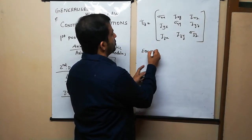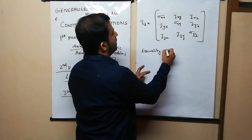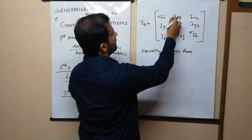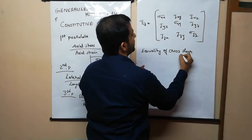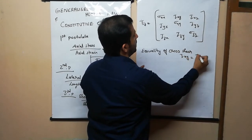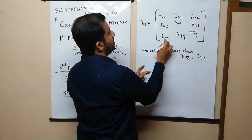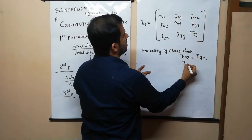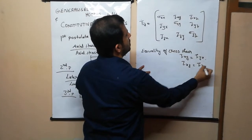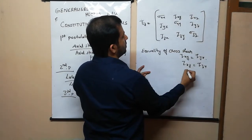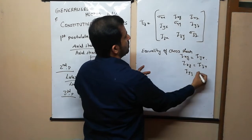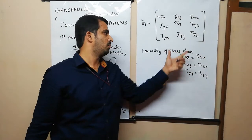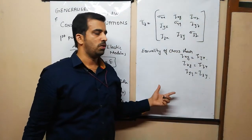The equality of cross shear states that tau_xy equals tau_yx, tau_zx equals tau_xz, and tau_yz equals tau_zy. So in general we take only six independent rectangular stress components because of the equality of cross shear.